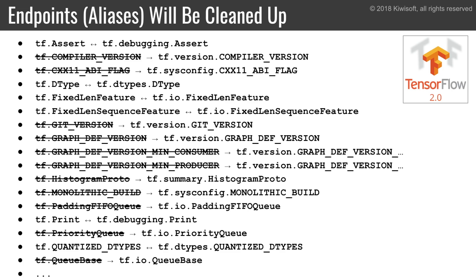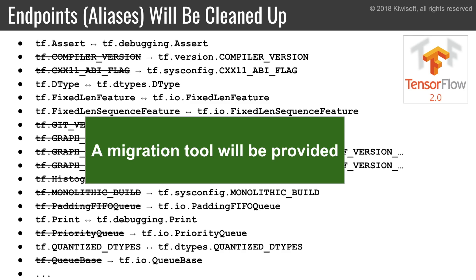The API will be better organized. For example, everything related to debugging will be placed in the tf.debugging package. Some functions will be moved, others will just have a new alias. TensorFlow 2.0 will try to better balance the need for a fairly flat hierarchy that makes coding less verbose, and the need for well-organized packages to make it easier to find related functions. A migration tool will be provided to convert TensorFlow 1 code to TensorFlow 2 code. It will probably still require some hand-tuning, but at least it will take care of a significant part of the migration.